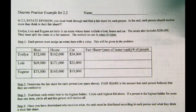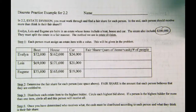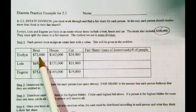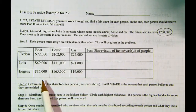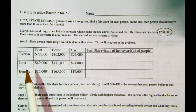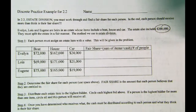On your worksheet, we have an example where Evelyn, Lois, and Eugene are heirs in an estate. There is also $200,000 in cash. We take the major items — boat, house, car, and the $200,000 — and figure out what everybody thinks is their fair share. Evelyn will say the boat is worth $72,000, house $162,000, car $24,000. Lois and Eugene do the same thing. Notice these values are different, and nobody can know what the others bid. Some people call this the method of sealed bids.